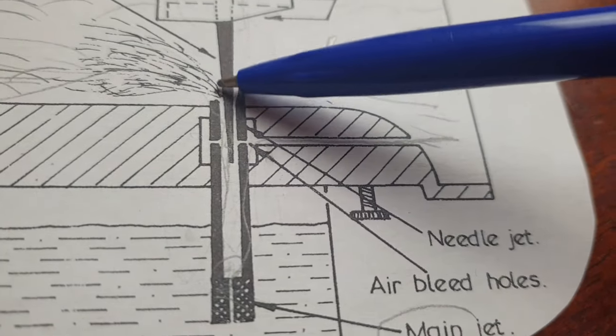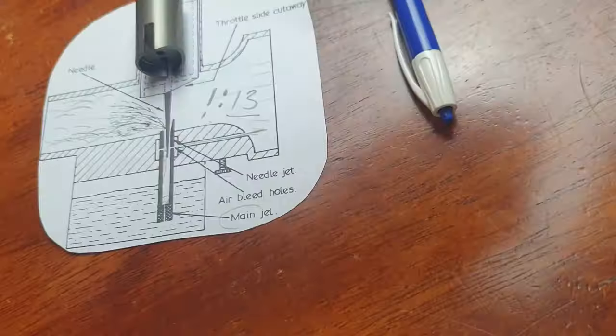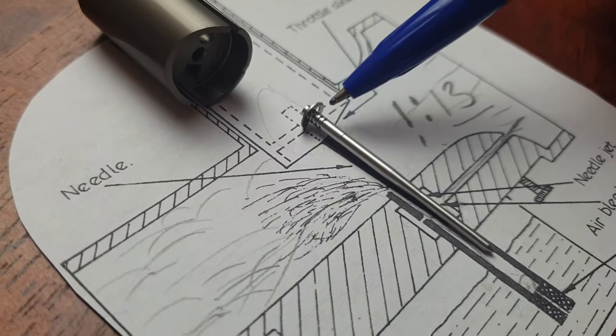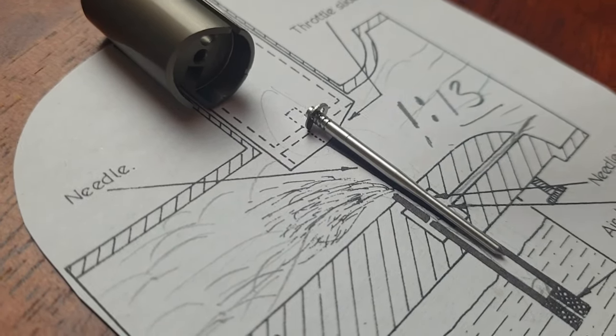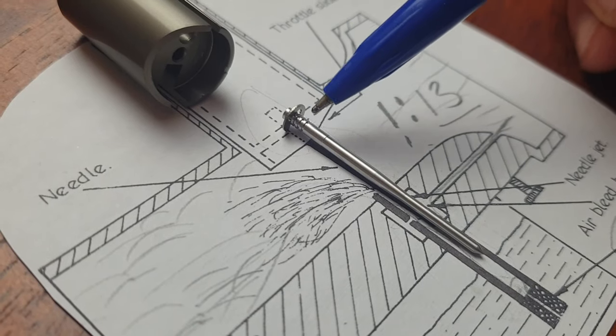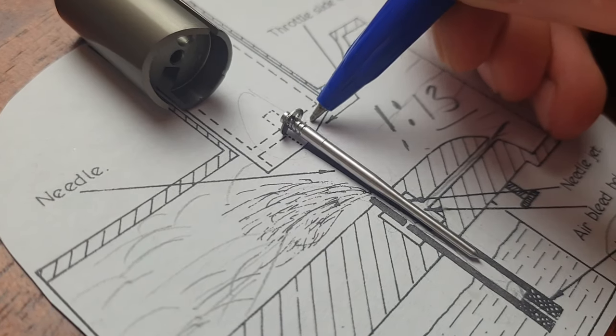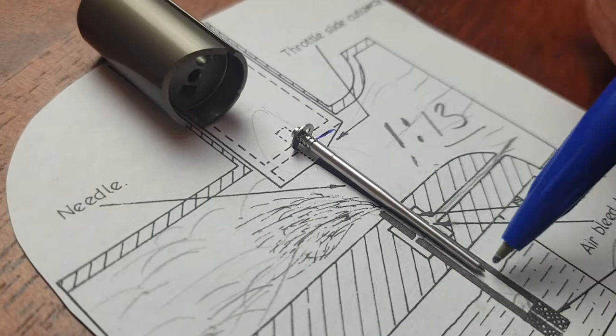This is throttle slide and here is the needle. By adjusting your clip, you're adjusting the needle height. If you want to get richer mixture, you need to put the clip down. In that case, if you adjust the clip lower, you're gonna lift the needle like this example here.